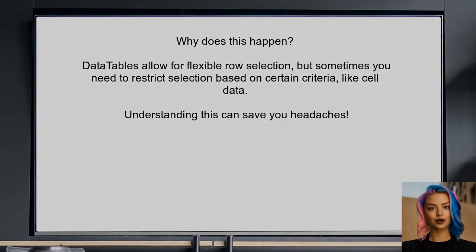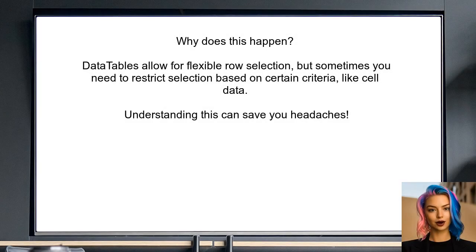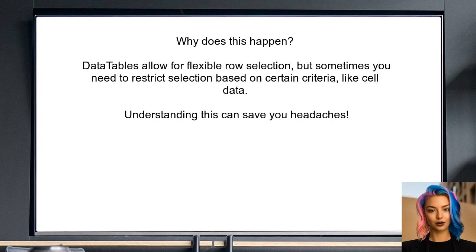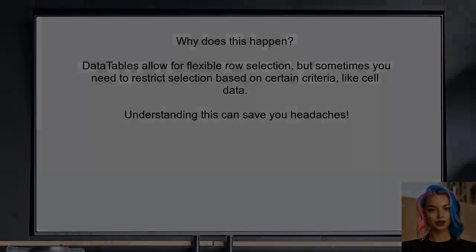So why does this happen? Data tables allow for flexible row selection, but sometimes you need to restrict selection based on certain criteria, like cell data. Understanding how to implement this can save you a lot of headaches.